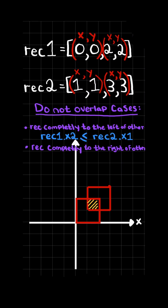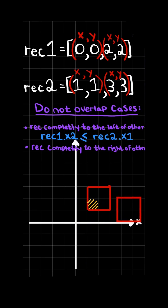Similarly, the next condition where the rectangles do not overlap is when one rectangle is completely to the right of the other — in other words, when the x coordinate of the bottom left corner of the first rectangle is greater than or equal to the top right x coordinate of the second rectangle.